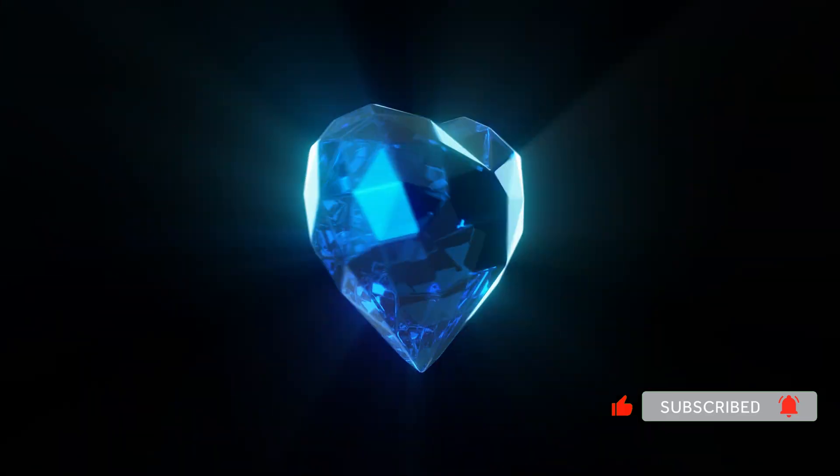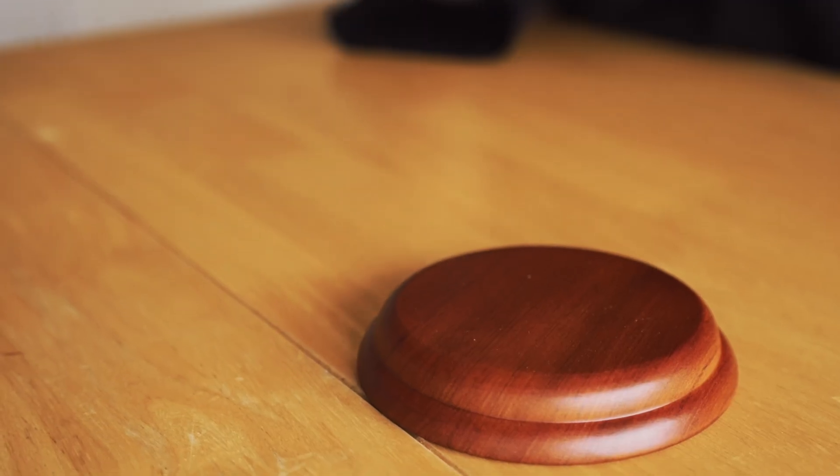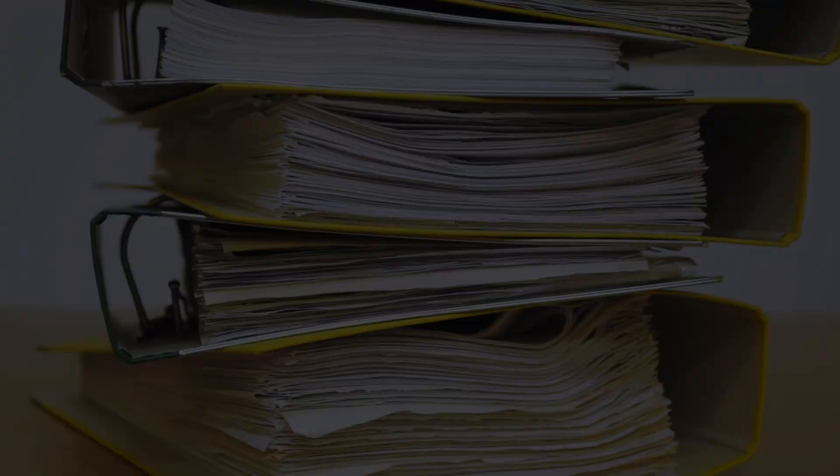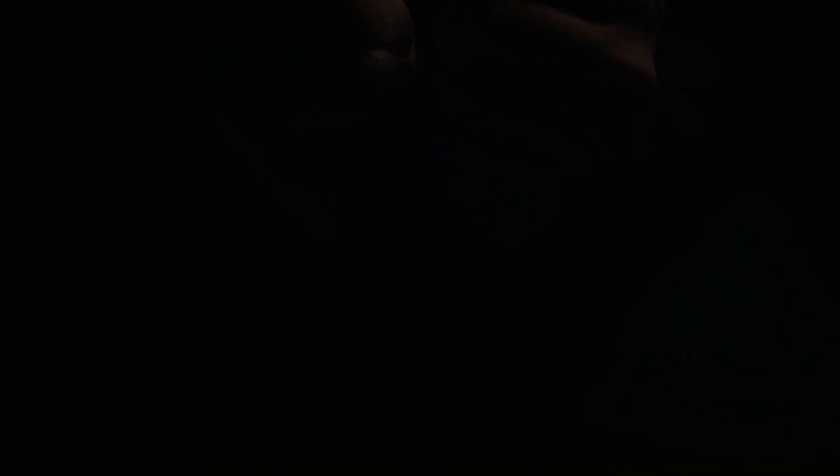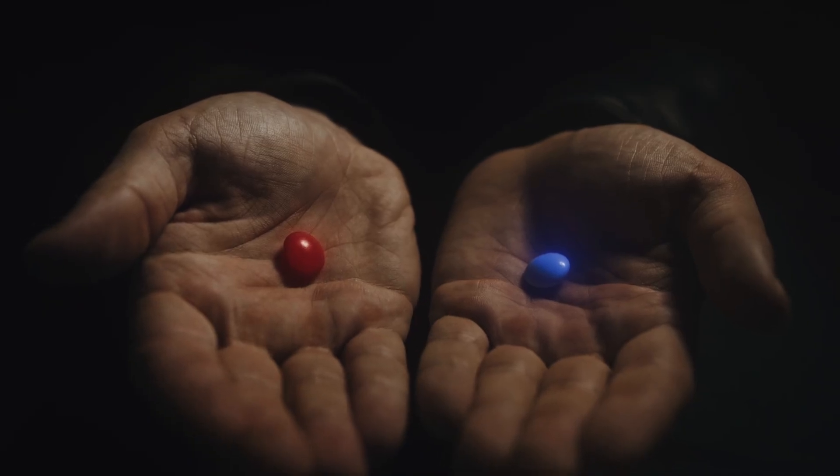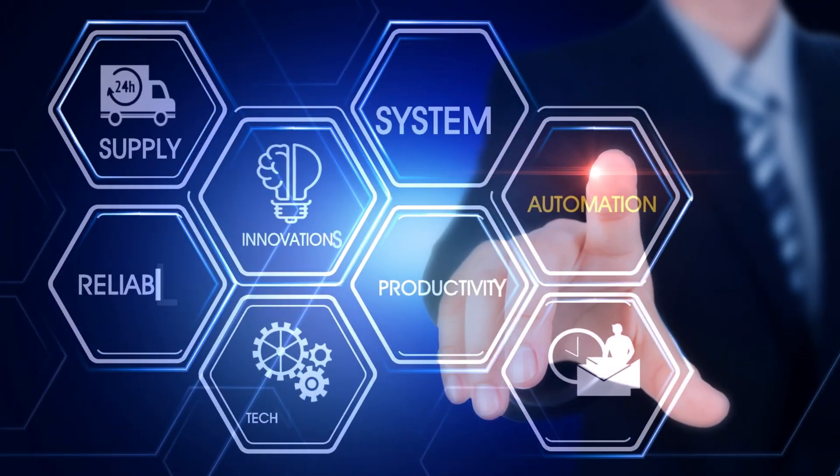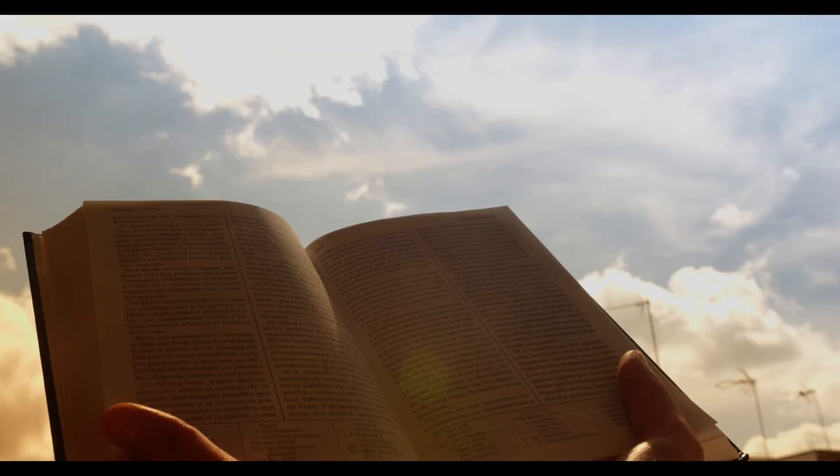When glucose depletes, your willpower collapses. This is why judges grant parole 65% of the time in the morning, but only 10% before lunch. Same cases. Different glucose levels. Your brain makes life-altering decisions based on blood sugar.